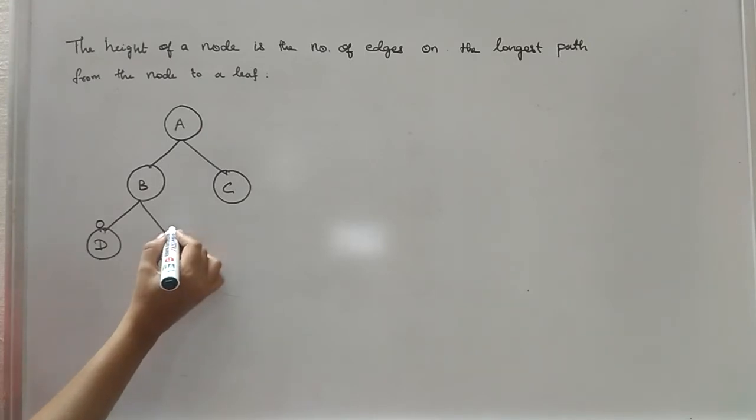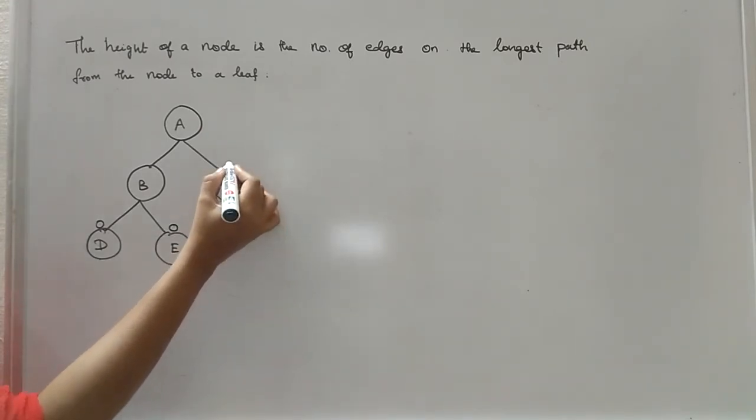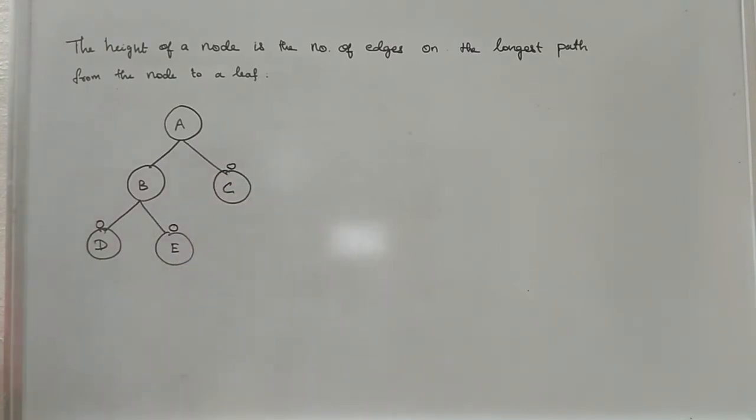And in the same way, for this node also 0 and for this node also 0. Easily you can write for all the leaf nodes the height will be 0.